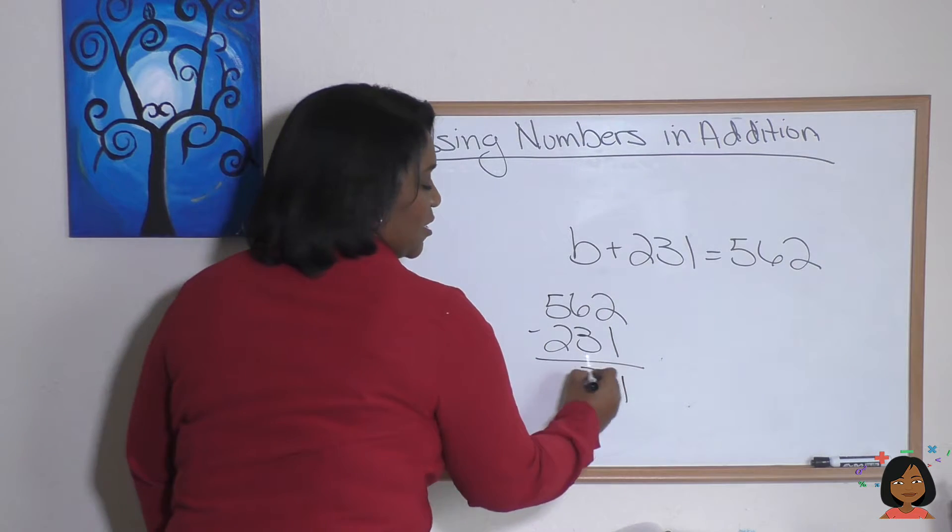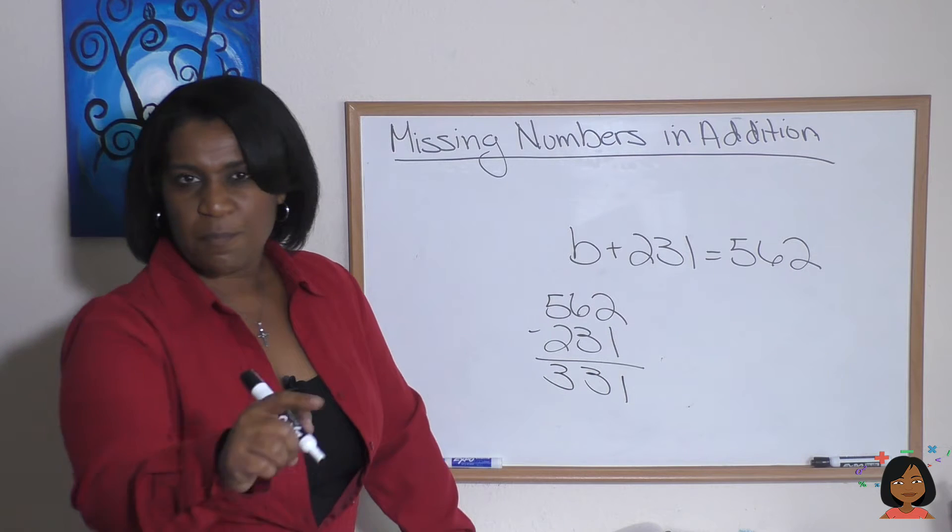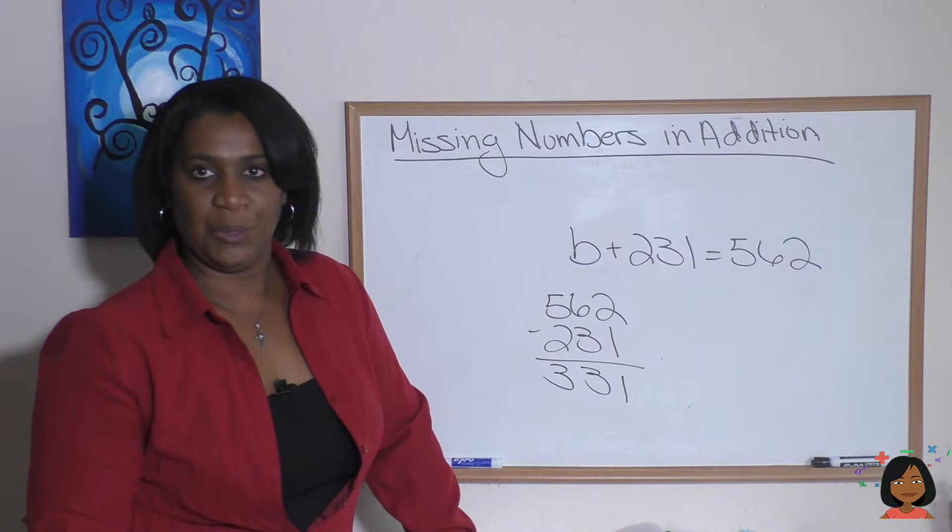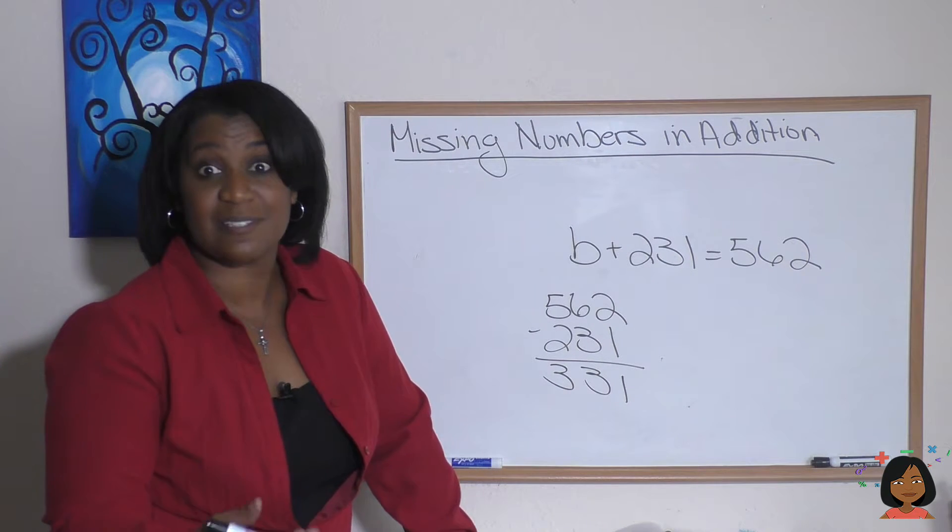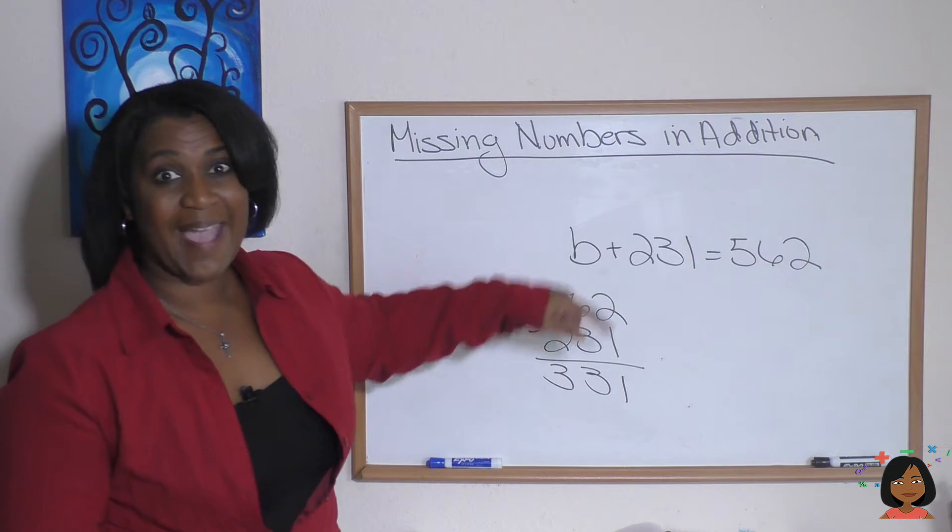2 minus 1 is 1. 6 minus 3 is 3. 5 minus 2 is 3. But are we done? No. We have to check to make sure this is a good answer. We're going to take our 331 and put it back into our equation.